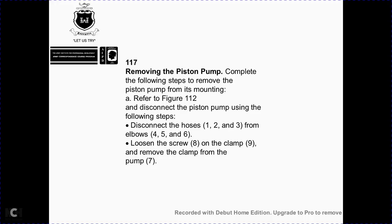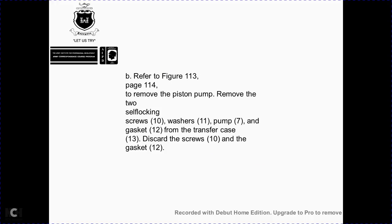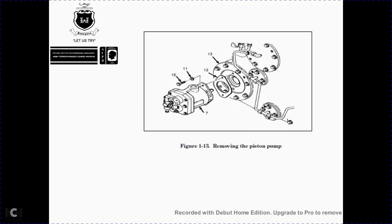Removing the piston pump. Complete the following steps (refer to figure 1-12): disconnect the piston pump by disconnecting hoses 1, 2, and 3 from elbows 4, 5, and 6. Loosen screw 8 and clamp 9, then remove the clamp from pump 7. Refer to figure 1-13, page 1-14: remove the two self-locking screws 10, washers 11, pump 7, and gasket 12 from transfer case 13. Discard screws 10 and gasket 12.